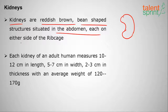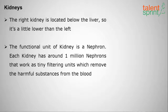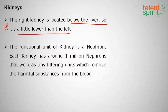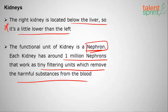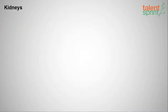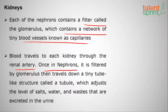Each kidney of an adult human measures 10 to 12 centimeters in length, 5 to 7 centimeters in width, and 2 to 3 centimeters in thickness, with an average weight of 120 to 170 grams. The right kidney is located below the liver, so it is lower than the left kidney. The functional unit of the kidney is the nephron. Each kidney has around 1 million nephrons that work as tiny filtering units to remove harmful substances from the blood. Each nephron contains a filter called the glomerulus, which is a network of tiny blood vessels called capillaries.